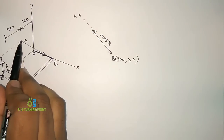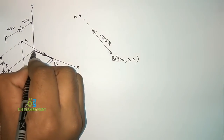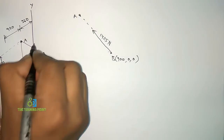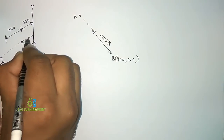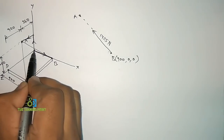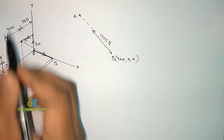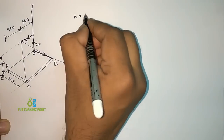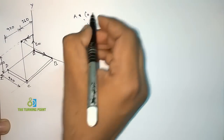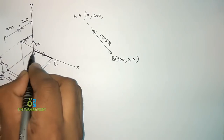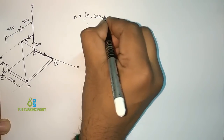Next, let us find the coordinates of A. Starting from the origin, I travel along the Y direction and parallel to the Z axis to reach point A. I traveled 600 in the Y direction and 360 parallel to the Z axis. I did not travel along the X direction, so the X coordinate is 0. Since both directions are positive, A = (0, 600, 360).